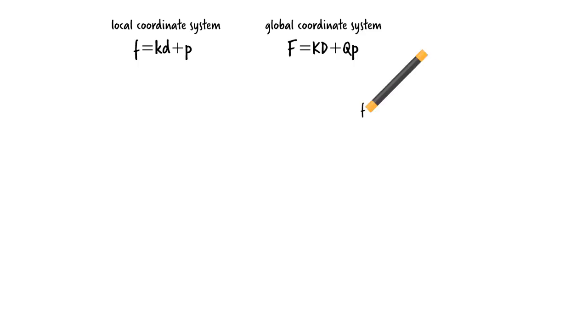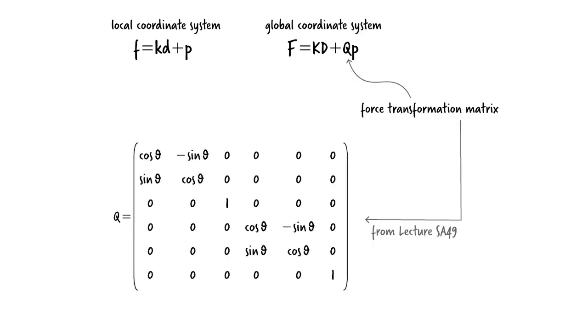Where Q is the force transformation matrix defined in lecture SA49. Here, theta is the member's inclination angle. Let's use uppercase P to refer to Q times the lowercase P. So the uppercase P is the vector of fixed end forces specified in the global coordinate system. We can use this vector to come up with the equivalent joint loads for the purpose of calculating the joint displacements and rotations.